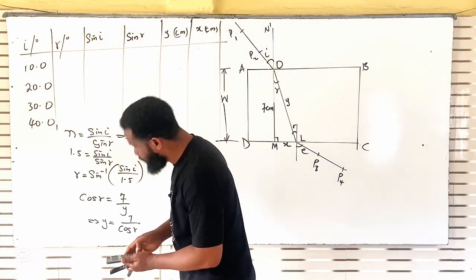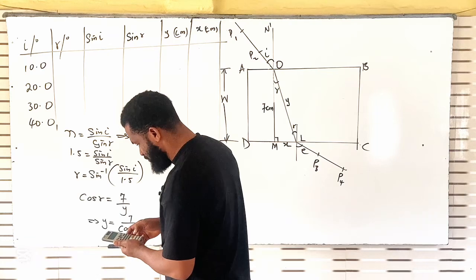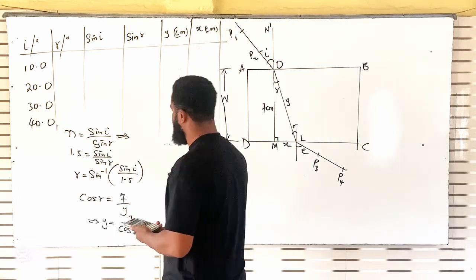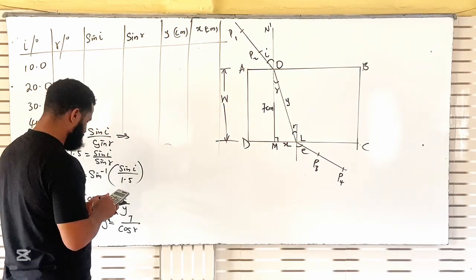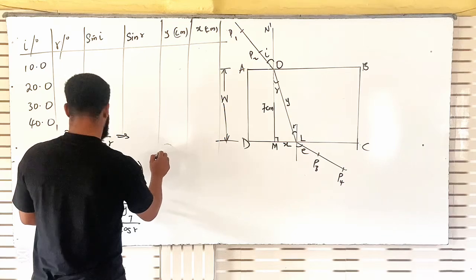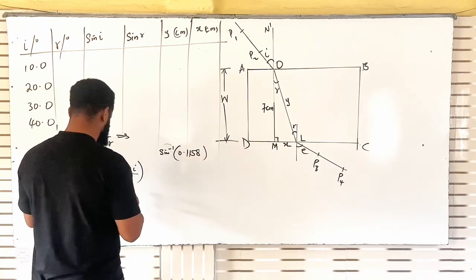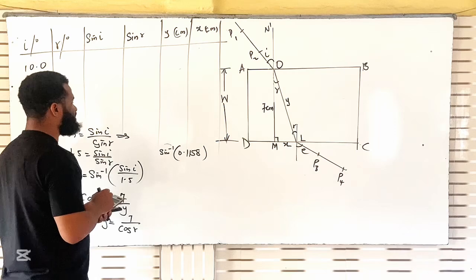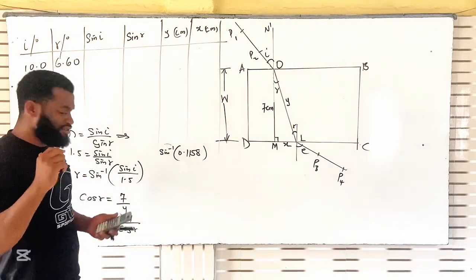For I = 10°: sine 10 divided by 1.5. Taking sine inverse of 0.1158 gives R = 6.6°. Please make it to one decimal place so that you can be able to measure it.